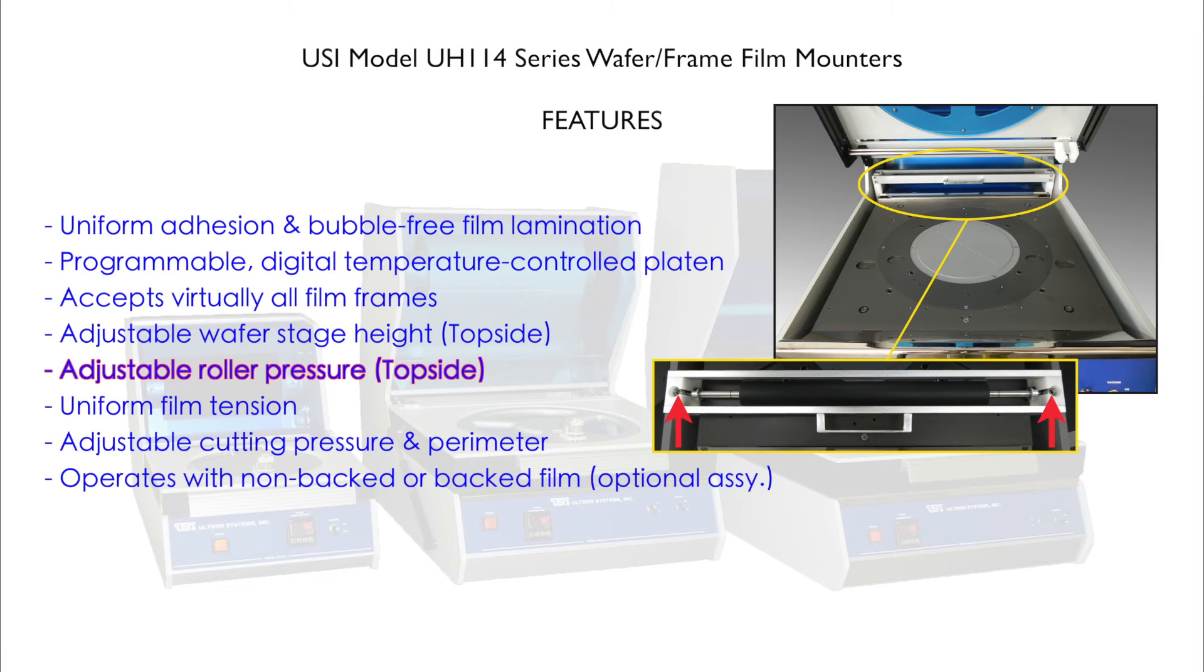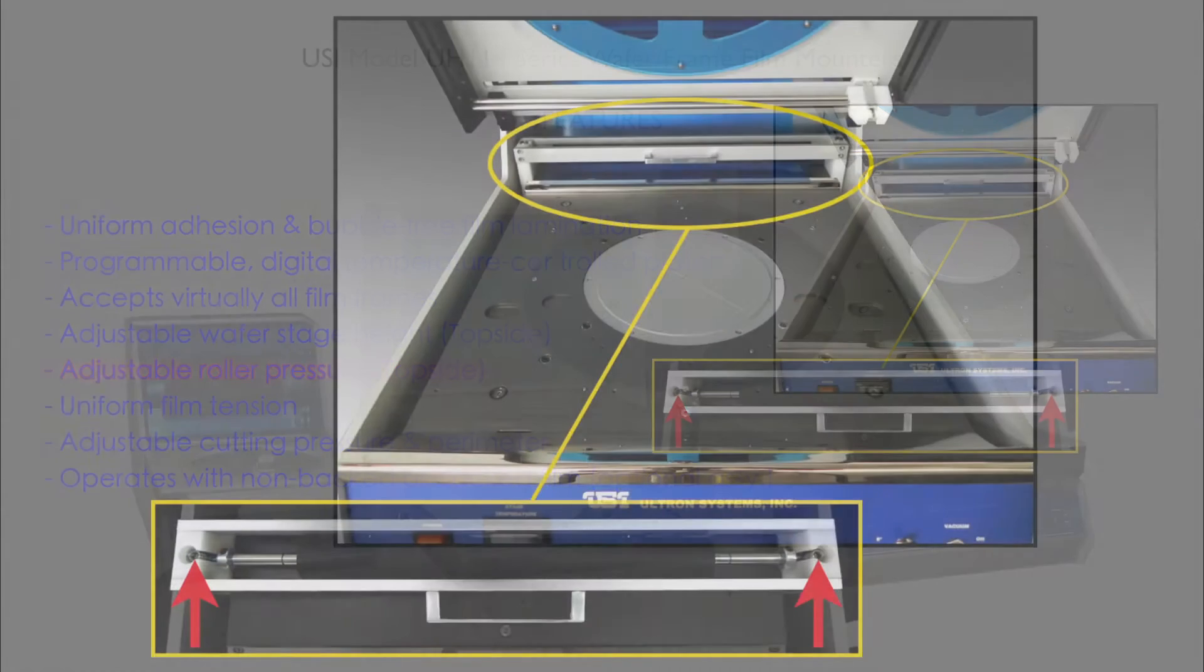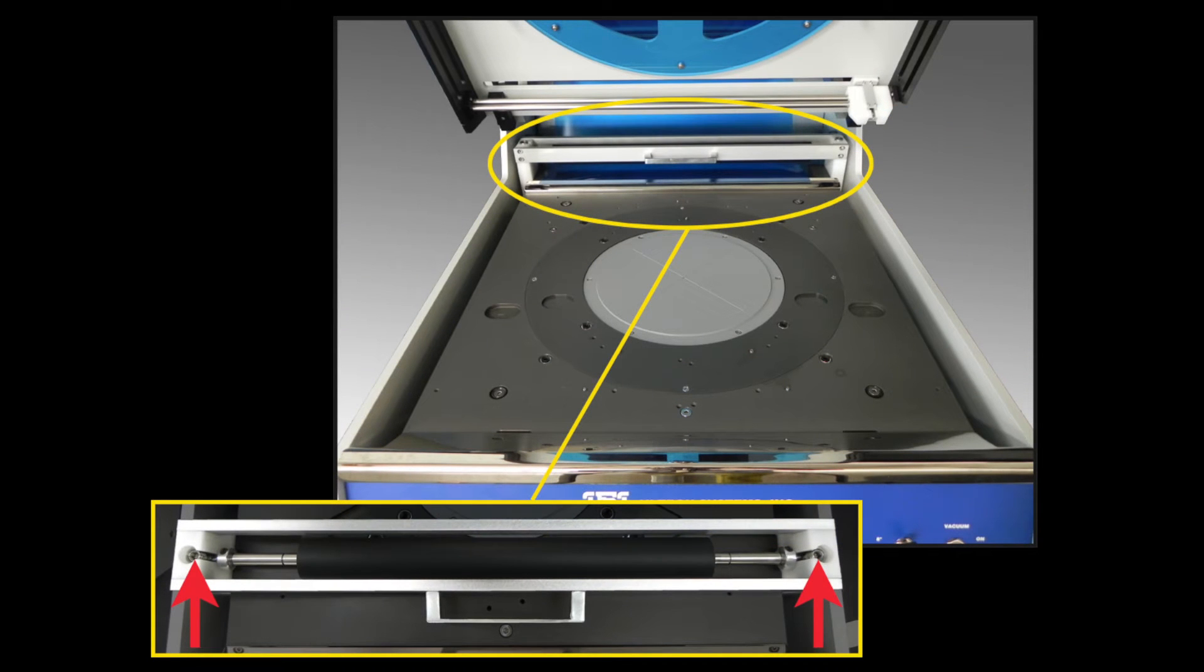Adjustable roller pressure. To accommodate various wafer fragilities and varying process requirements, the spring-loaded roller pressure is also easily adjusted from the top side of the units. This allows quick and immediate changes on the fly.